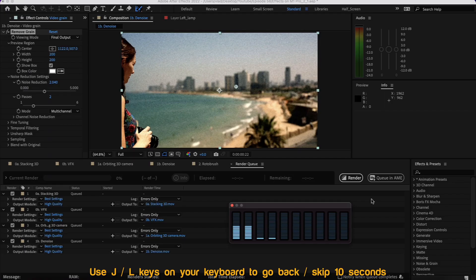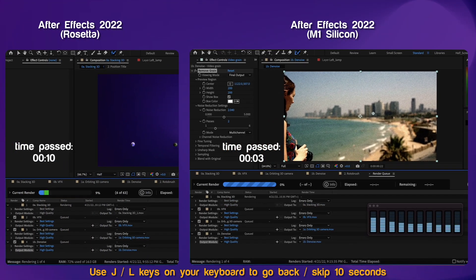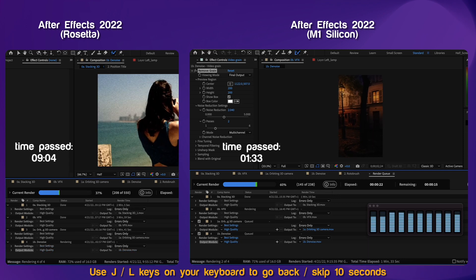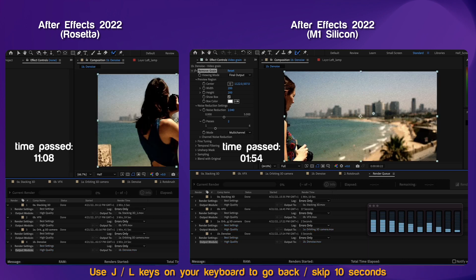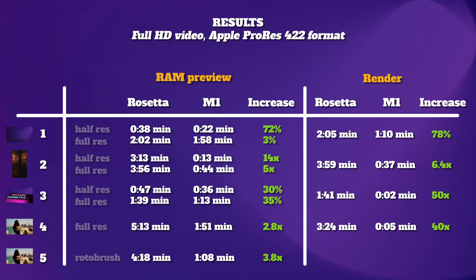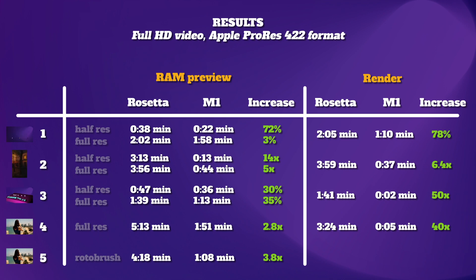I've added all the projects to the render queue to test render times. These results show the power of the M1: for the first video, 1 minute 10 seconds for M1 vs 2 minutes 5 seconds for Rosetta. For the second video, 37 seconds for M1 vs 3 minutes 59 seconds for Rosetta. For the third video, just 2 seconds for M1 vs 1 minute 41 seconds for Rosetta. For the fourth video, 5 seconds for M1 vs 3 minutes 24 seconds for Rosetta. That was the testing for the After Effects M1 native version — hope you enjoyed it as much as I did, talk to you in the next video.